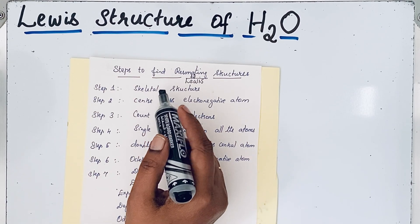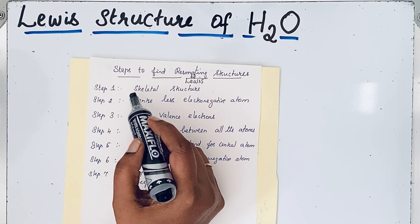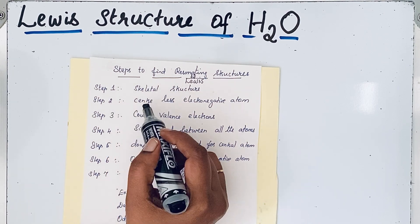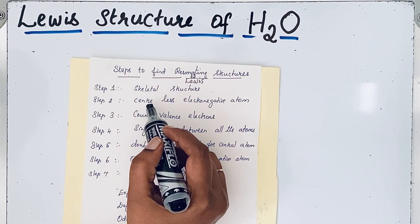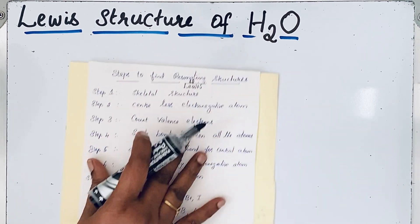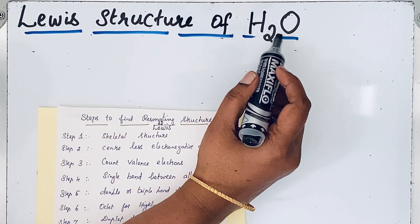To write a Lewis structure, there are several steps. First, write the skeletal structure. When you draw the skeletal structure, the central atom should be the less electronegative atom. In the H2O molecule,